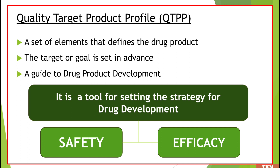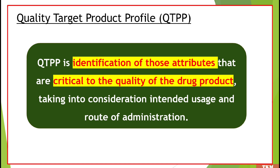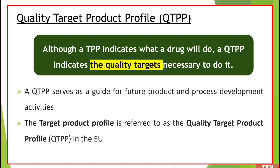Now coming to the next concept — quality target product profile (QTPP). It is a set of elements that defines a drug product. Similar to TPP, a target or goal is set in advance, and it is a guide to the drug development process. It is a tool for setting strategy for drug development, taking into consideration safety and efficacy. Up until now everything seems similar between TPP and QTPP — so where does the difference lie?